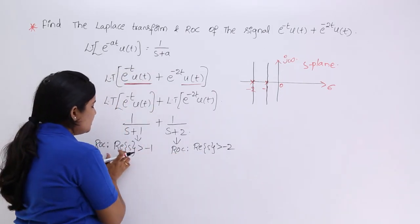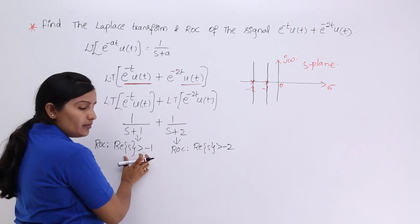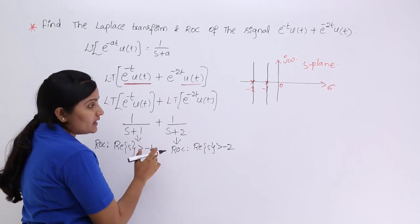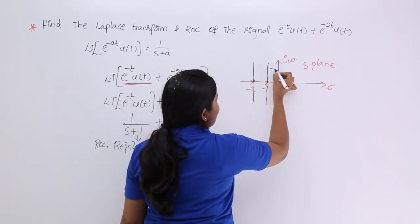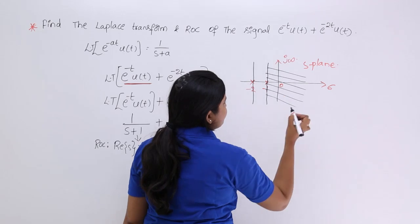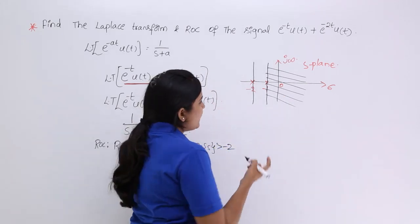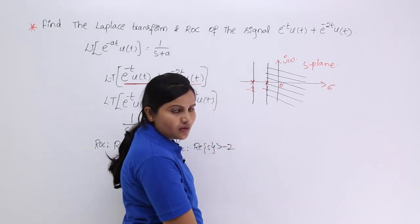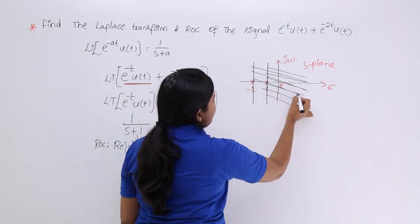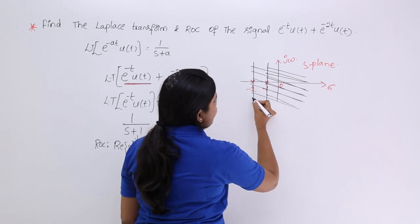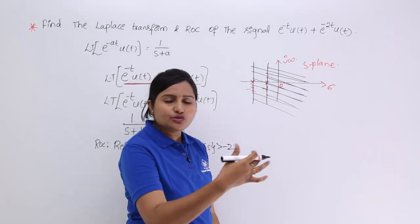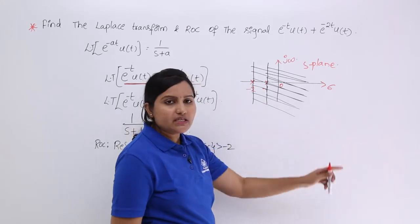According to the given function, the ROC for the pole at minus 1 requires real of s greater than minus 1, which covers the region to the right. For the pole at minus 2, the ROC is real of s greater than minus 2, covering minus 1, 0, 1, 2, 3 and so on.